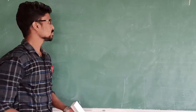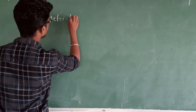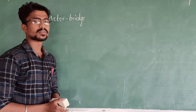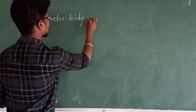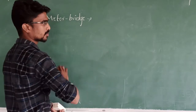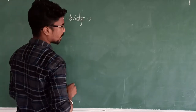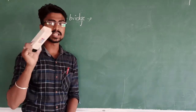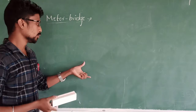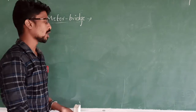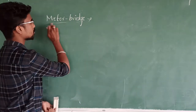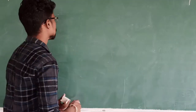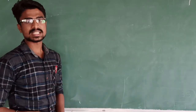Next is the meter bridge. The meter bridge is a practical form of the Wheatstone bridge. It is used to find the resistance of a wire. We have an experiment based on the Wheatstone bridge using the meter bridge, where we find out the resistance of a wire given in the experiment. The meter bridge works based on the principle of the Wheatstone bridge, so using it you can calculate the unknown resistance of any given wire.